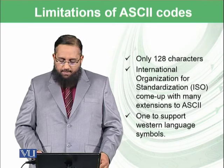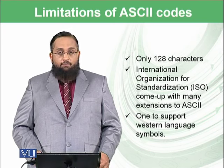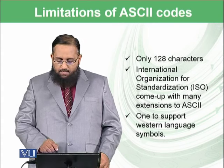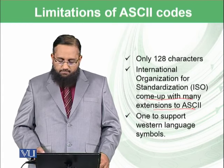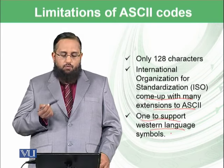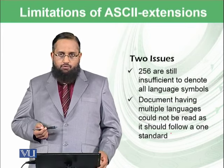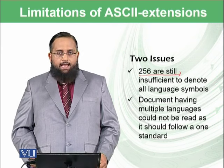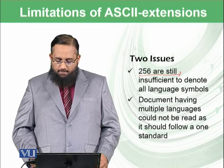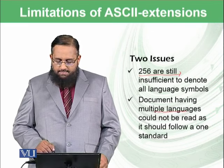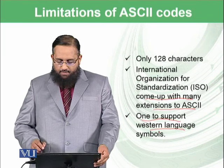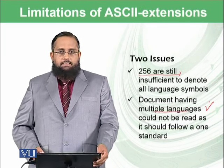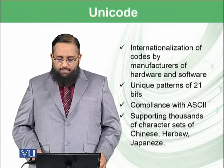ASCII codes had some limitations as well. There are far more than 128 characters in the world. The International Organization for Standardization (ISO) came up with extensions to ASCII codes — one to support one western language, another to support another language — but these also had issues. Even 256 characters are still insufficient to represent all language symbols. Documents having multiple languages could not be read correctly as they needed to follow a single standard, and ISO had defined different patterns for different western symbols, so a document with multiple patterns could not be read.